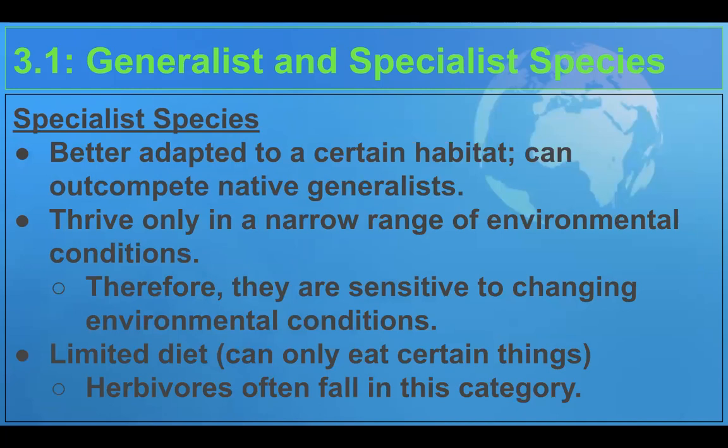Specialist species are really conditioned to survive in one or a small variety of habitats. They're better adapted than a generalist and truly thrive in their habitat, but their range is much, much smaller. As a result, they are more sensitive to changing conditions and will be more negatively affected than generalists if habitat conditions change. They also have a limited diet — maybe only one or a couple of things — and that limited diet can have negative impacts if their food decreases in quantity or disappears altogether.